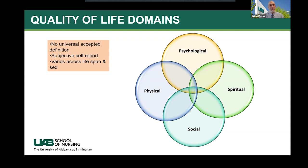I'd like to frame this discussion within the quality of life domains. There is no universal definition for quality of life — it's a subjective, self-reported concept that varies across lifespan and gender. There are four basic domains: psychological, spiritual, social, and physical. What happens in one domain can impact the others, so it's important to begin our discussion within this context and to think very holistically.